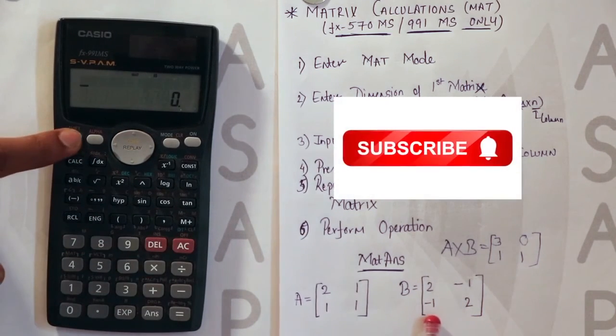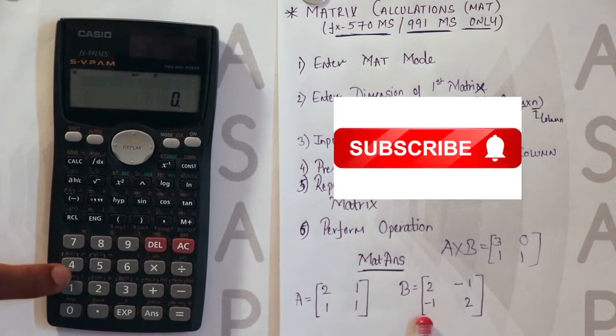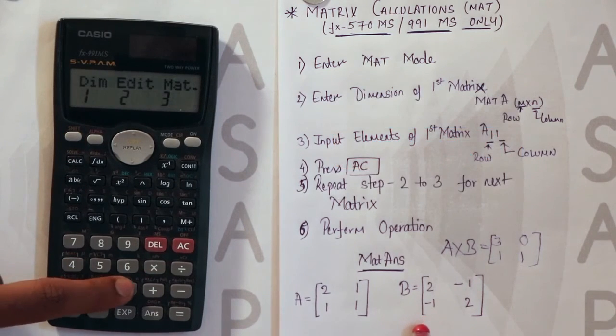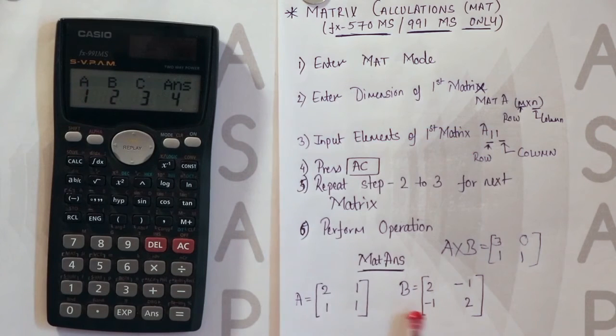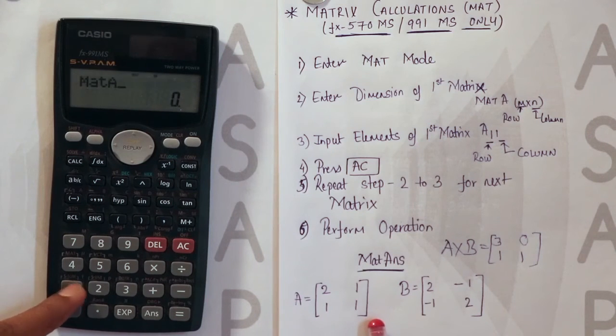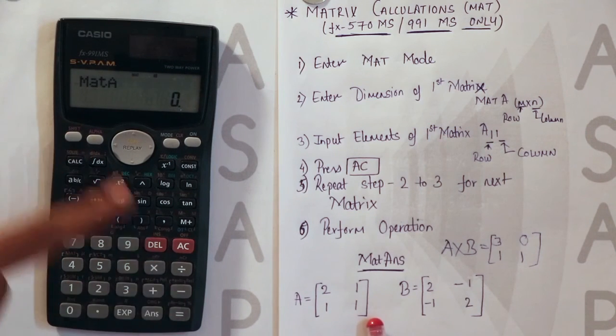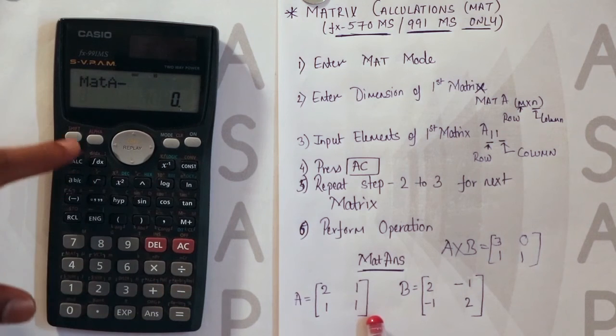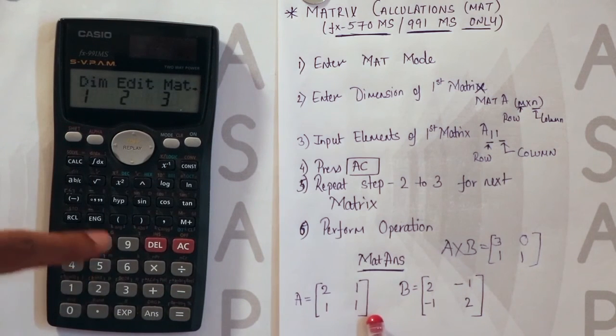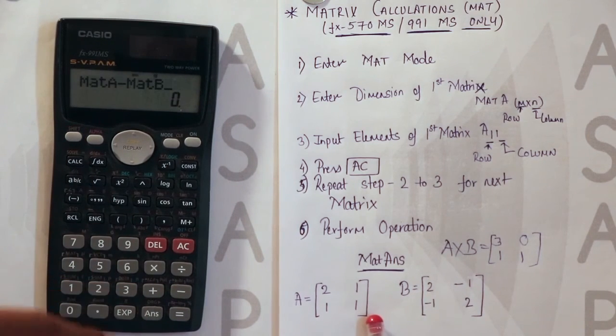Now similar way we will see for subtraction of matrix. Shift 4. Select the matrix which you need to perform. A minus B or B minus A. Accordingly you will select the matrix. Here we will perform A. Then minus. Shift 4. Matrix B. So matrix A minus matrix B.